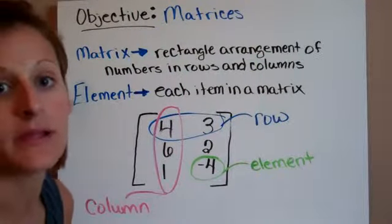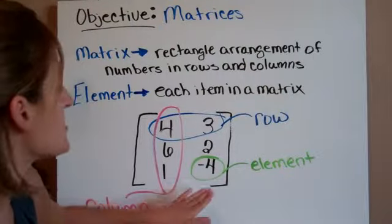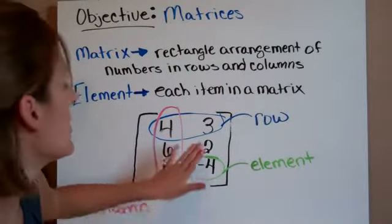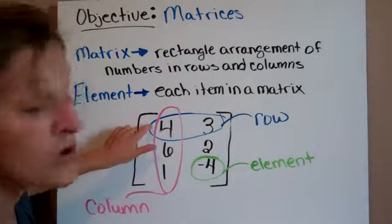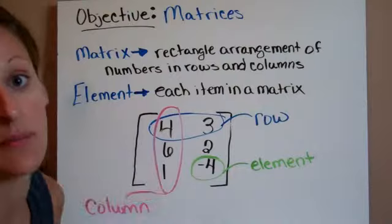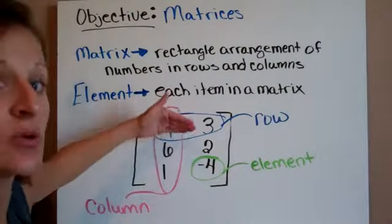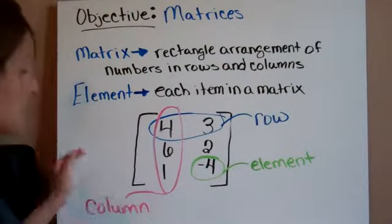An element is the individual item. So negative 4 is an element, 2 is an element, 3 is an element, 4 is an element, 6 is an element, 1 is an element. It's each individual thing is what an element is.